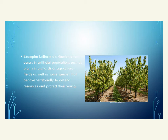The third pattern is uniform distribution, which is probably a little more artificial. In nature, territorial species may show somewhat uniform distribution, with each animal occupying a defined radius. The best example is agriculture — in an orchard, trees are evenly planted so they're not too close but as many as possible fit in. The same applies to planting any field of grain.